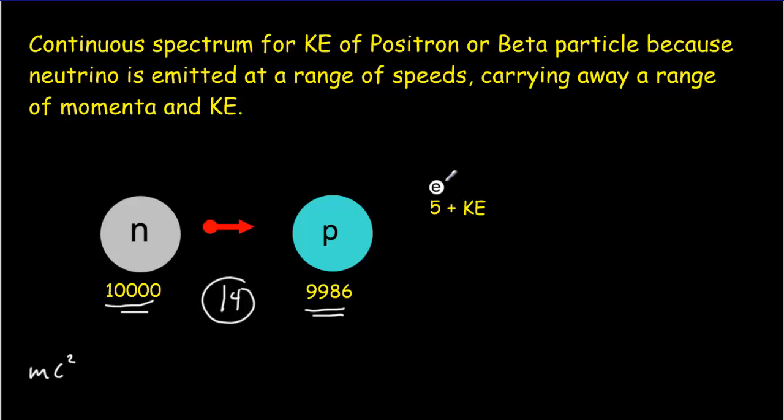We've got an electron that's going to come out here, and it's got a certain amount of mass energy that turns out to be 5. So that means we're left with 14 minus 5 equals 9 units of energy that are left over for the kinetic energy of that electron.